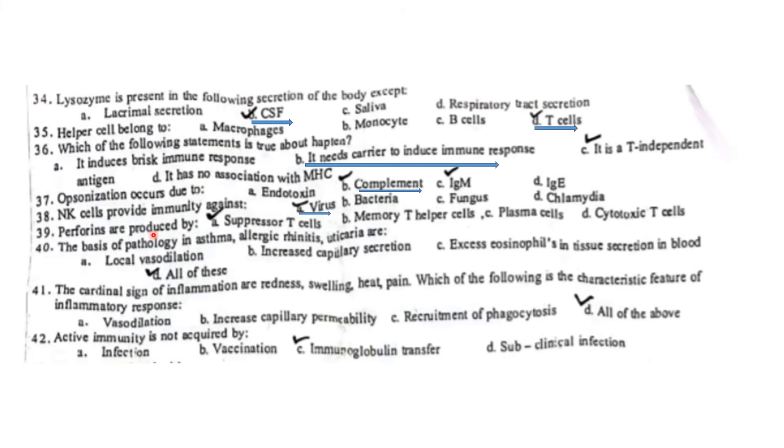Perforins are produced by cytotoxic T cells. The basis of pathology in asthma includes all of the above options: local vasodilation, increased capillary secretion, and excess eosinophilic tissue secretion. The cardinal signs of inflammation are redness, swelling, heat, and pain. Which of the following is the characteristic feature of the inflammatory response? All of the above are characteristic features of inflammation.